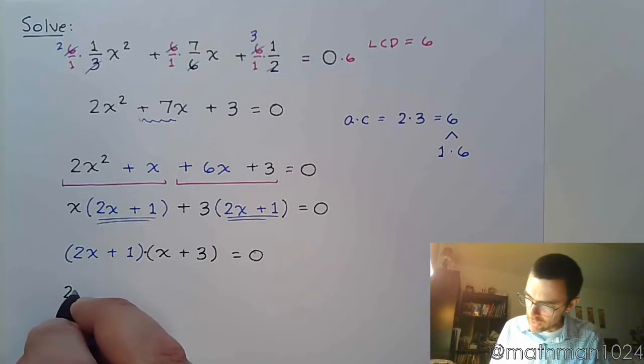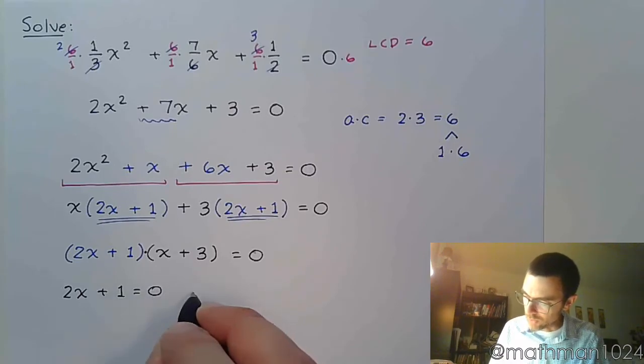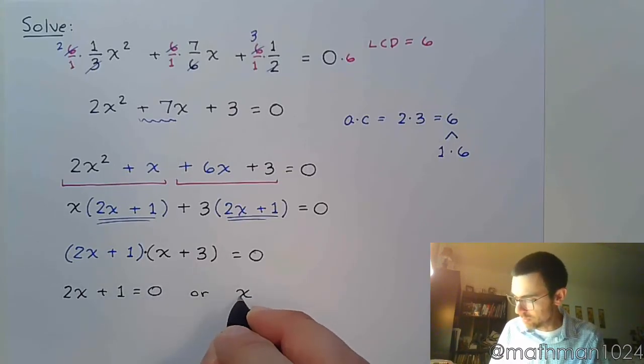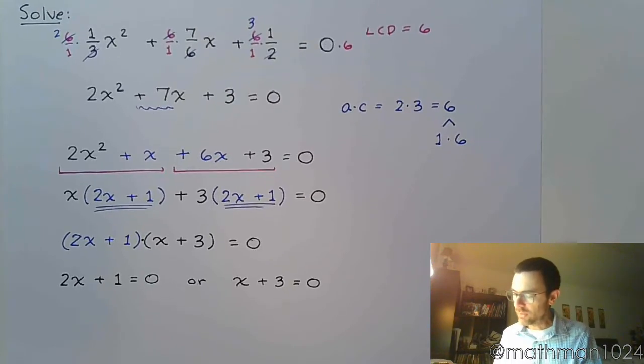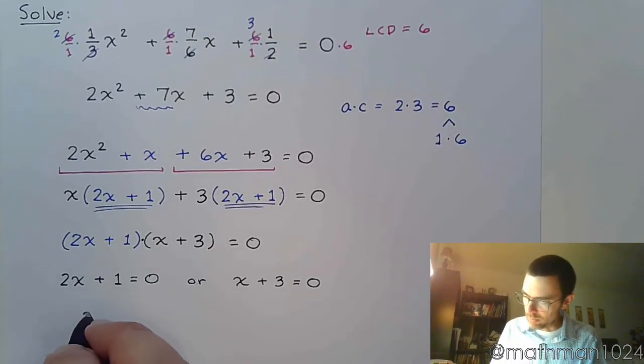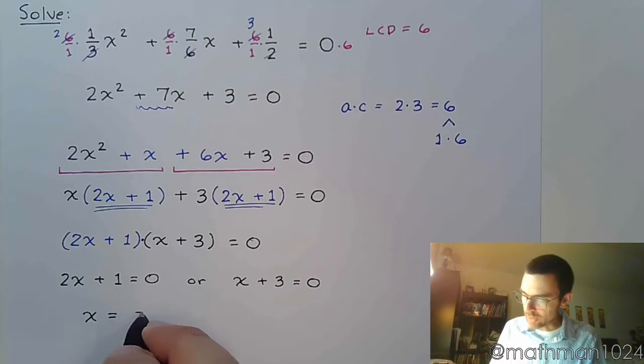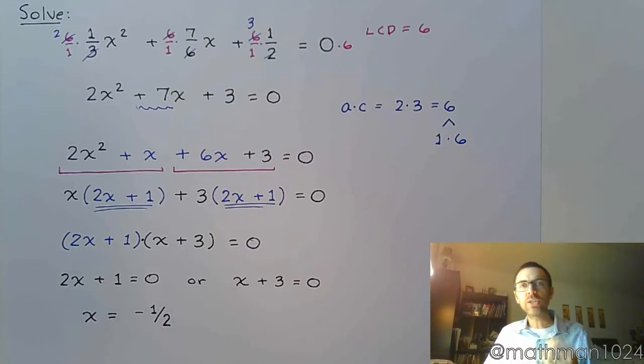I use that zero factor theorem. So 2x plus 1 equals 0 or x plus 3 equals 0. So solving this shouldn't be too bad. You want to first subtract the 1 and then divide by 2. And again, if you need to show each step, go for it. It doesn't really matter.